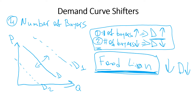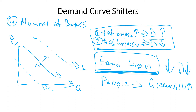Or suppose Greenville becomes a popular, inexpensive town in eastern North Carolina and lots of people are moving in. The population of Greenville is increasing, meaning more buyers on the market, and therefore demand for goods and services in restaurants and shops will increase. So number of buyers is pretty self-explanatory.